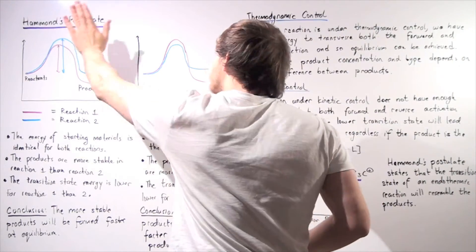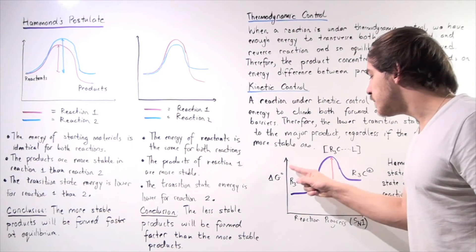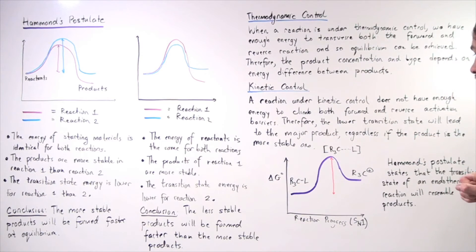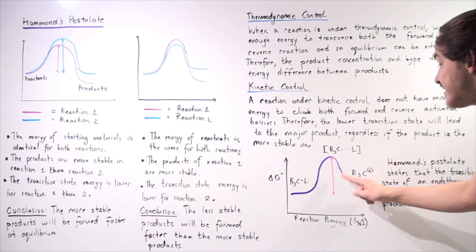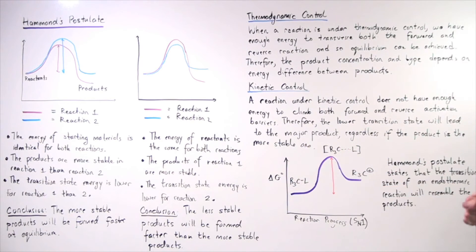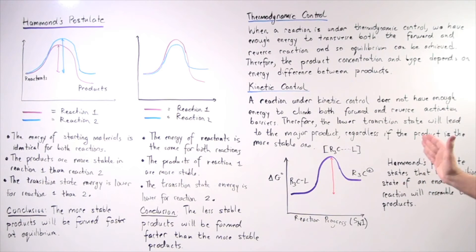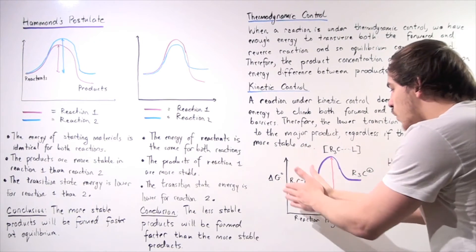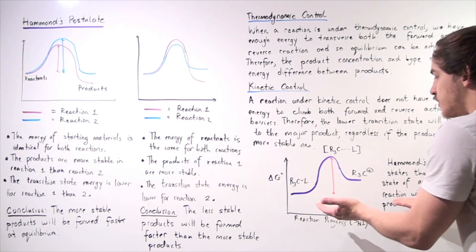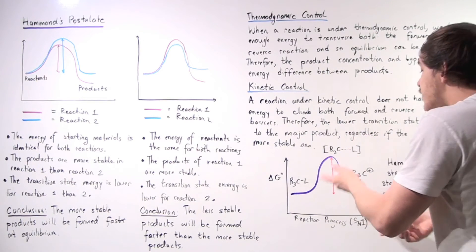Now let's talk about Hammond's postulate. Consider an SN1 reaction and its first ionization step — the substrate dissociates into a carbocation, and this will be our transition state. The ionization step is an endothermic reaction, meaning the products are less stable than the reactants. Hammond's postulate states that the transition state of an endothermic reaction will resemble the products. Notice that the activation energy peak is closer to the products than to the reactants, so for an endothermic reaction, the transition state will look more like the products than the reactants.